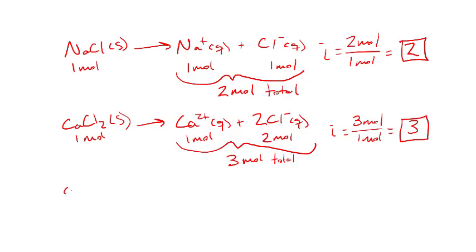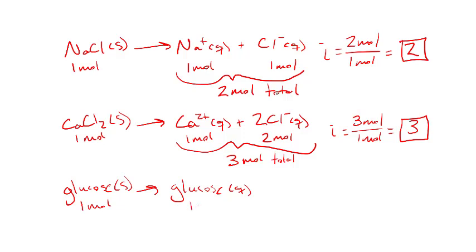Whereas if we look at a non-electrolyte like glucose solid, when put in solution it doesn't break up into any smaller parts or additional particles. Solid glucose simply becomes aqueous glucose. If we had one mole of glucose, we have one mole of glucose total in solution. So the Van't Hoff factor i equals one mole of particles over one mole of solute — i = 1.